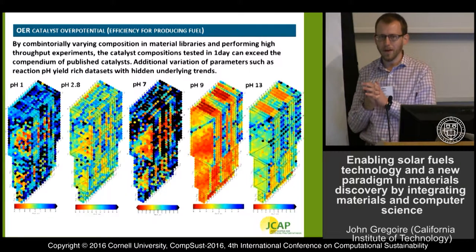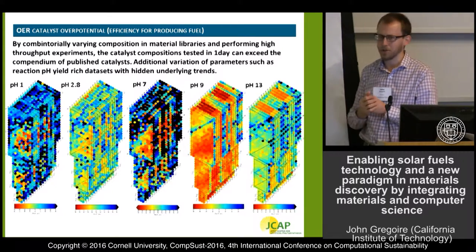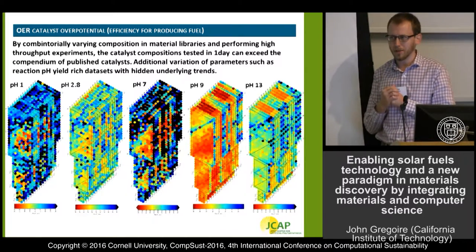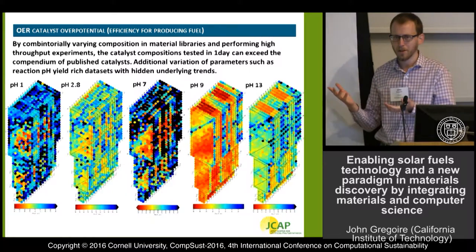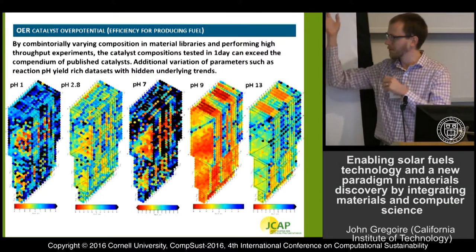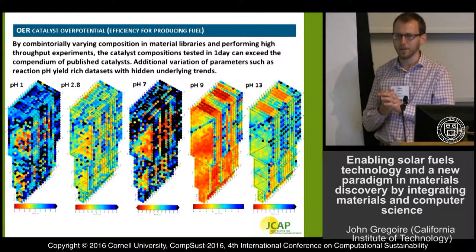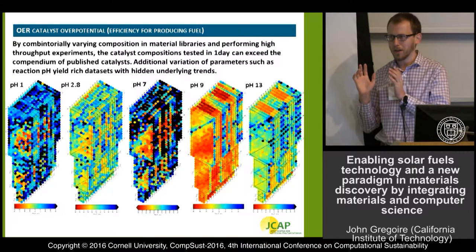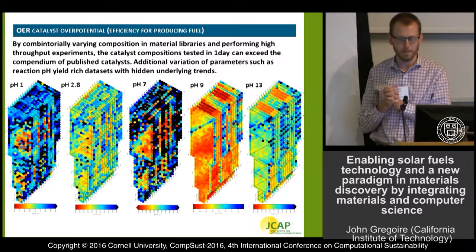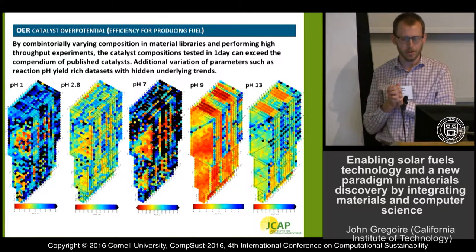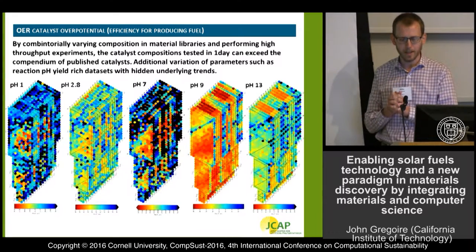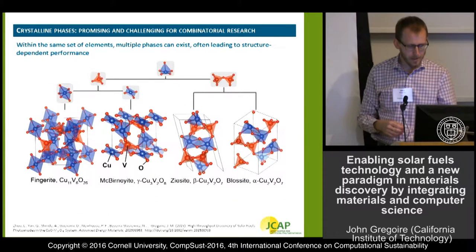From a device point of view, if we want to build a device that works at a given pH, red means good in this color scale — we choose any red composition and we can build a device. But if you just choose the red materials and try to build devices, you've ignored the vast majority of the data, which includes all these trends as a function of pH, composition, temperature, and other variables. Getting a comprehensive understanding of this requires a real computational framework, which is currently starting to emerge but is really in an infant phase in the materials science community.